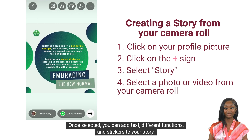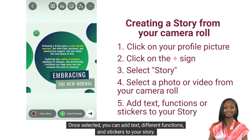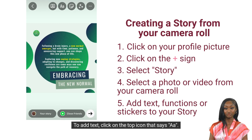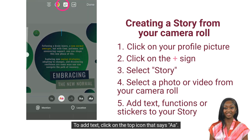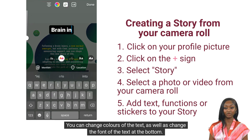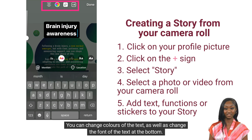Select a photo or video from your camera roll. Once selected, you can add text, different functions, and stickers to your story. To add text, click on the top icon that says AA. You can change the colors of the text, as well as change the font of the text at the bottom.